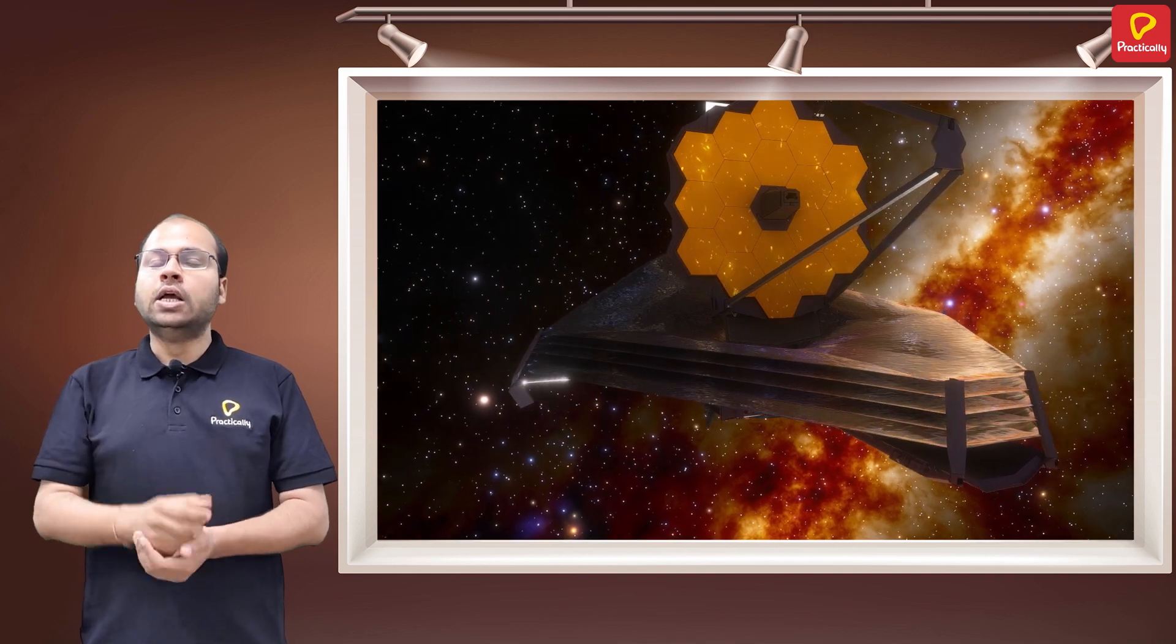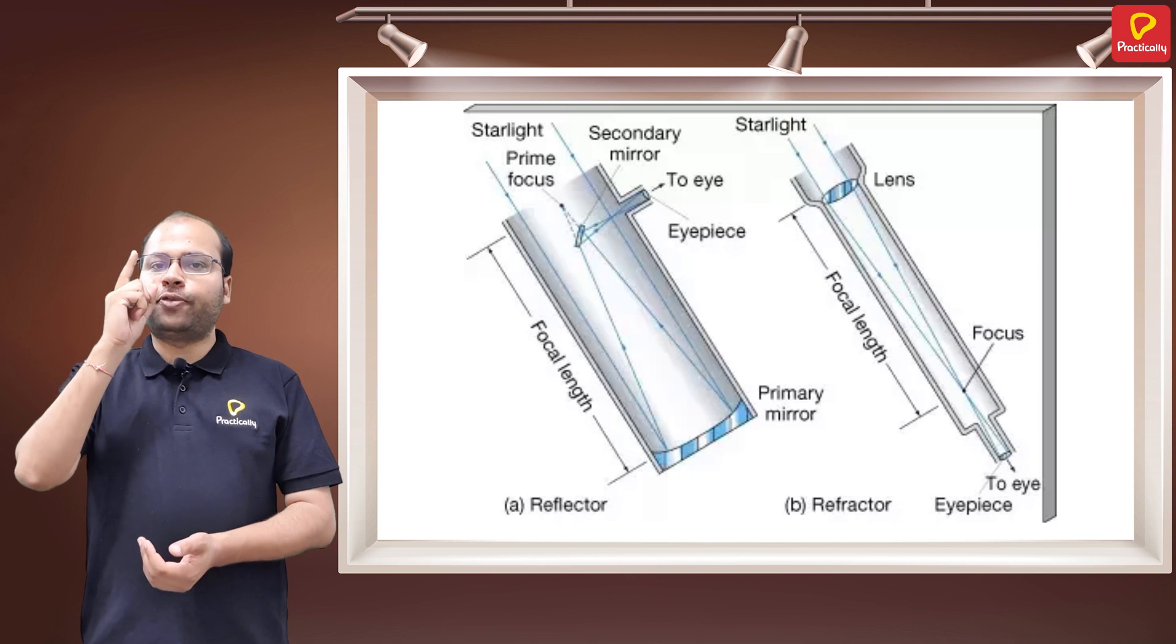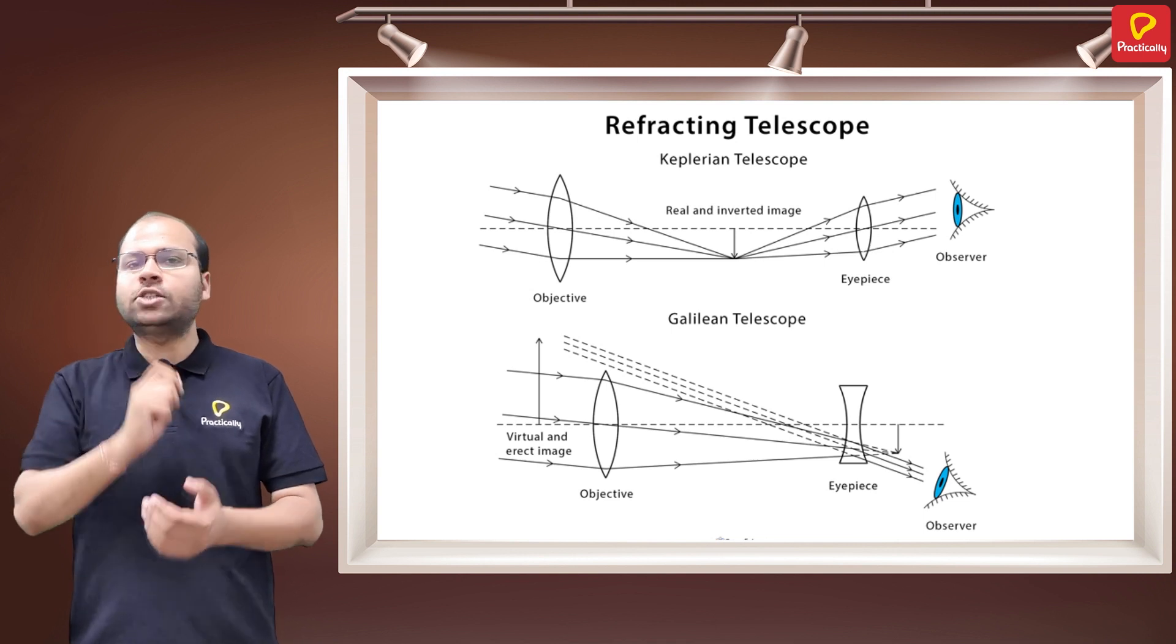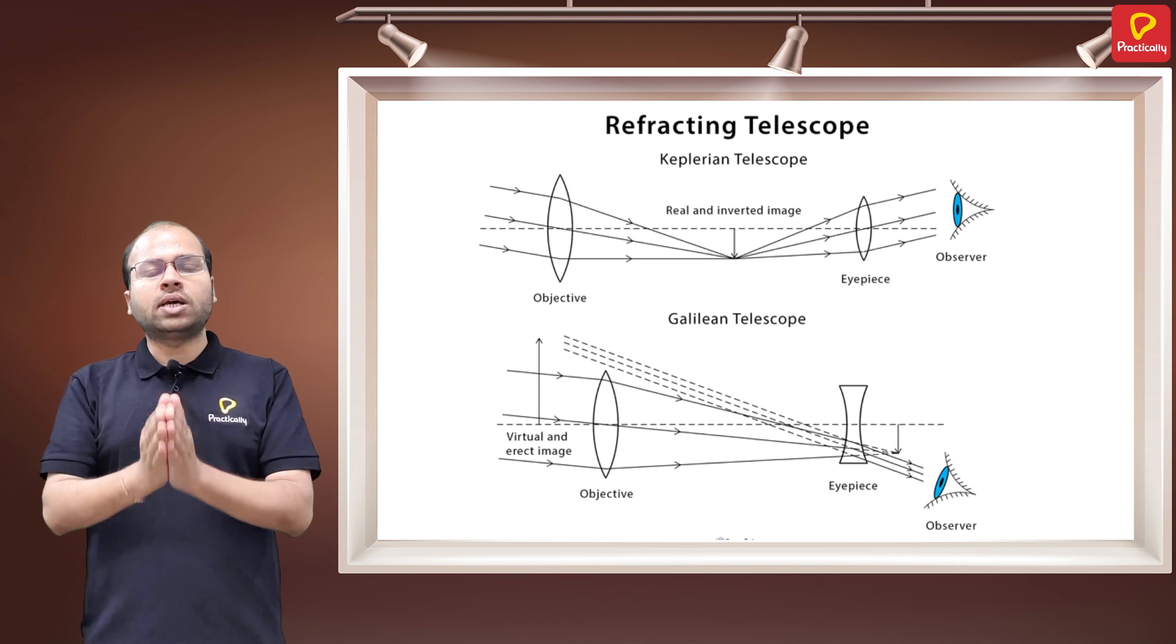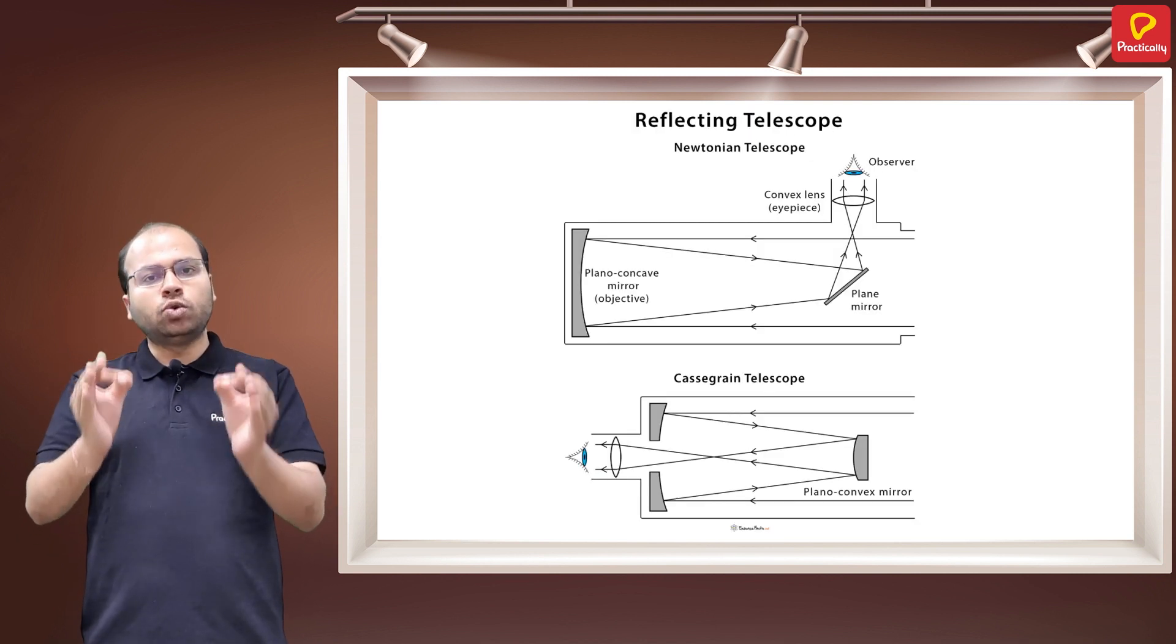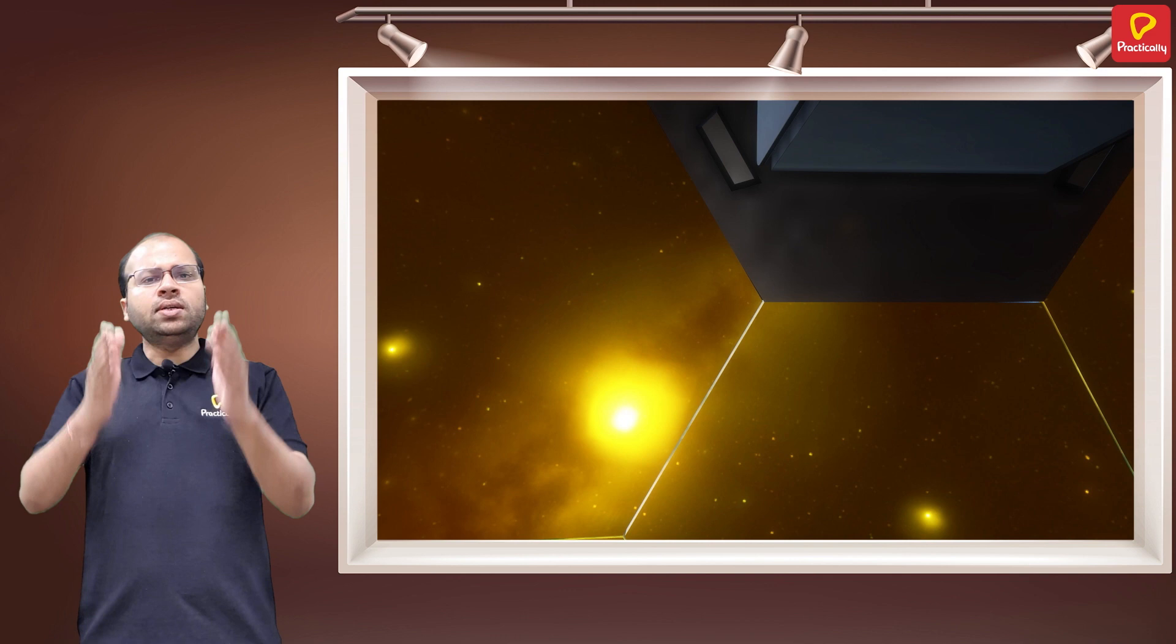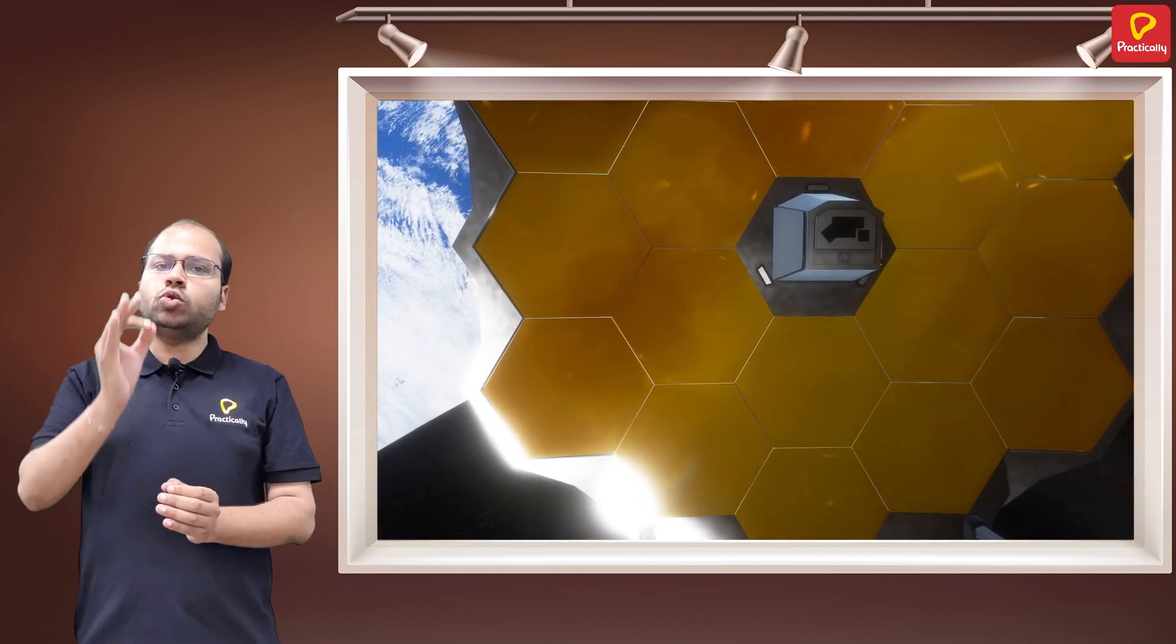The type of optical telescope which uses a lens as its objective is called a refracting telescope, and that which uses a mirror as its objective is called a reflecting telescope. Modern telescopes like the James Webb Space Telescope, in order to be free from any kind of chromatic aberrations or color distortions which happen in the case of lenses, use concave mirrors instead of a lens as its objective.